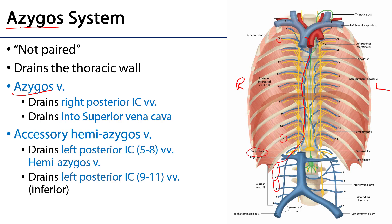On the left side there are two vessels that drain into the azygous vein: the accessory hemi-azygous vein and the hemi-azygous vein. The accessory hemi-azygous vein typically drains intercostal spaces five through eight, crosses the midline, and feeds into the azygous vein. The hemi-azygous vein drains intercostal spaces nine through ten — sometimes also receiving the subcostal and an ascending lumbar — and also crosses the midline to feed into the azygous.